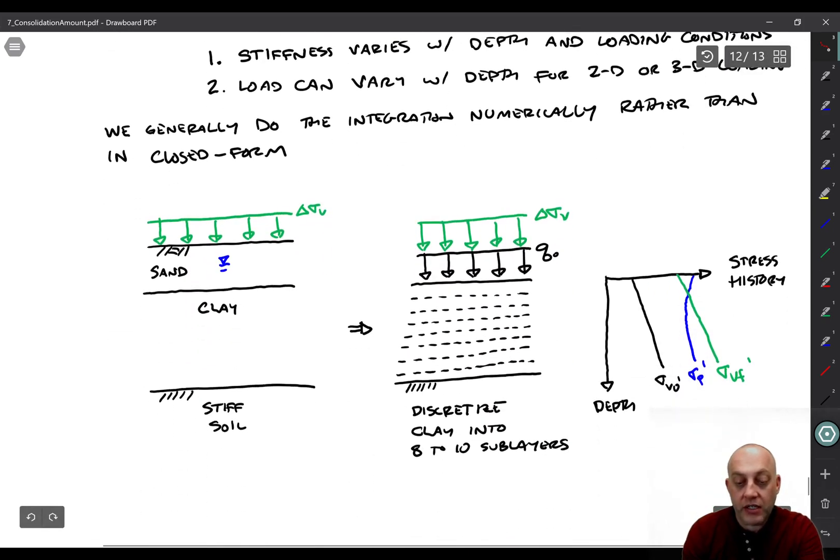So in general, we do the integration numerically. And the way we do that is, let's say we have a loading condition like this. You have some sand on top of some clay, and then you're adding some load to it, delta sigma V. First, we're not going to include the sand as part of our consolidation calculation. We're only interested in computing consolidation for the clay. So the first thing we'll do is just completely remove the sand and represent it with a variable called q0. And that q0 is the initial vertical effective stress at the top of the layer.